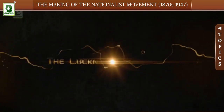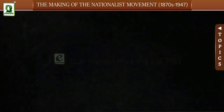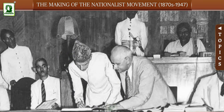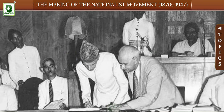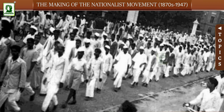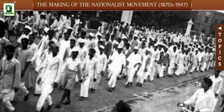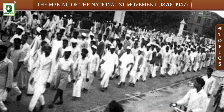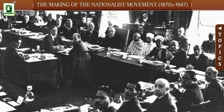The Lucknow Pact, 1916: The Lucknow Pact signed in 1916 was a historic pact. The Congress and the Muslim League decided to work together in their fight for self-rule. The moderates and extremists also united together.